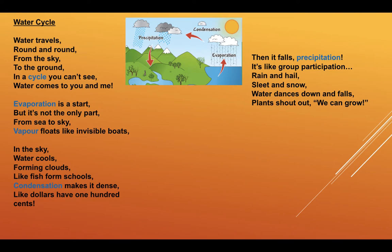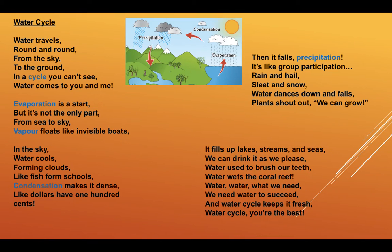So let me read the poem. Water Cycle. Water travels round and round from the sky to the ground in a cycle you can't see. Water comes to you and me. Evaporation is a start but it's not the only part. From sea to sky vapor floats like invisible boats. In the sky water cools forming clouds like fish form schools. Condensation makes it dense like dollars have 100 cents. Then it falls, precipitation! It's like group participation. Rain and hail, sleet and snow, water dances down and falls. Plants shout out we can grow. Verse five, it fills up lakes streams and seas. We can drink it as we please. Water used to brush our teeth. Water wets the coral reef. Water, water, what we need. We need water to succeed. And water cycle keeps it fresh. Water cycle you're the best.